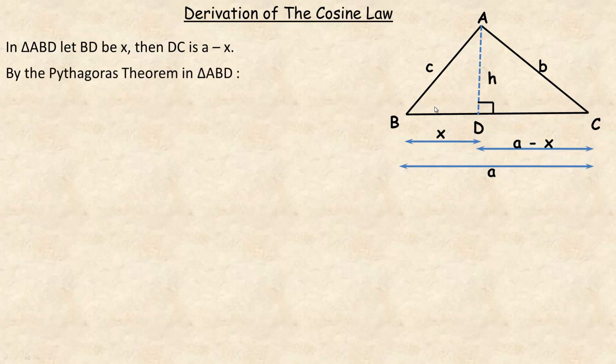So in this triangle, by Pythagoras' theorem in the ABD triangle, H squared plus X squared would equal C squared. And we're going to need that a little later down here.